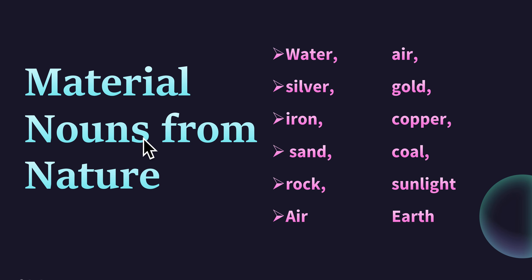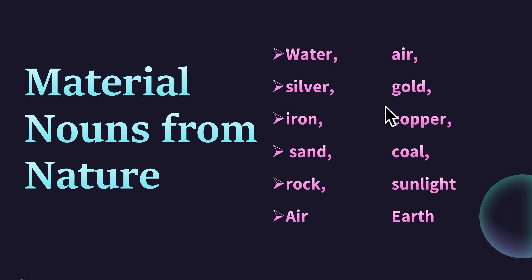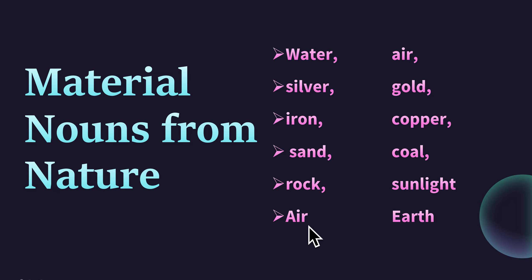Material nouns from nature: water, air, silver, gold, iron, copper, sand, coal, rock, sunlight, air, earth.